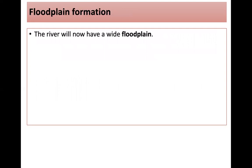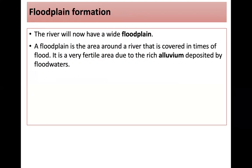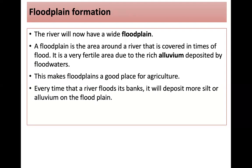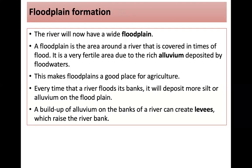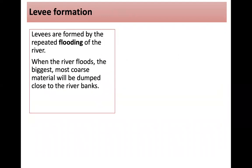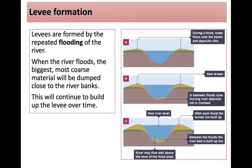A floodplain is the wide area around a river that's covered in times of flood. It's very fertile due to the rich alluvium deposited by floodwaters, making it a good place for agriculture. Every time the river floods its banks, it deposits even more silt or alluvium on the floodplain. A build-up of this on the banks creates levees, which raise the riverbank. Levees form through repeated flooding: when the river floods, the coarsest material is dumped close to the riverbanks and continues to build up. During a flood, water spills over and deposits silt as the surface area increases and energy drops. Between floods, the slow-moving river deposits silt in the riverbed, and with each flood, the levees are built up further.